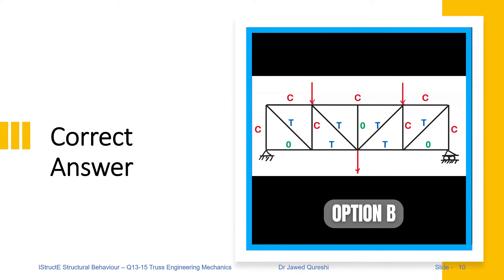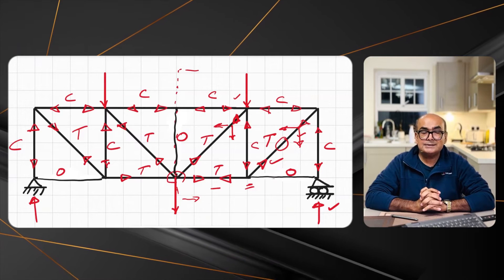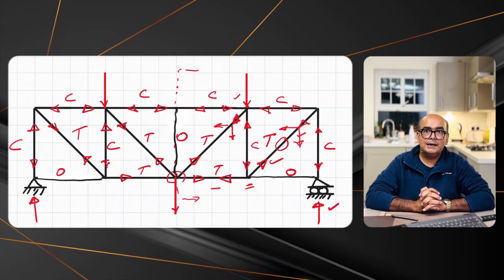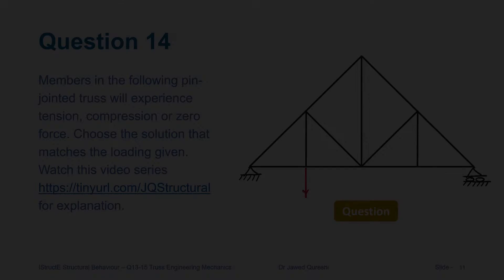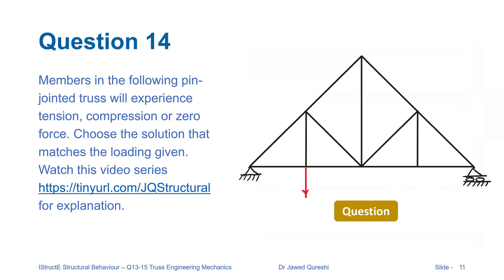Did you get this right? Don't worry if you didn't — you have this video to explain how I reached this solution. Let's now move to the next problem. In the second example, again, members are subjected to compression, tension, or zero force.